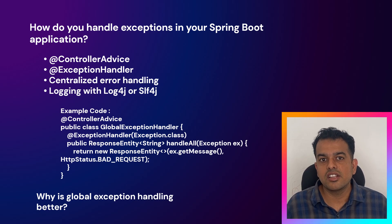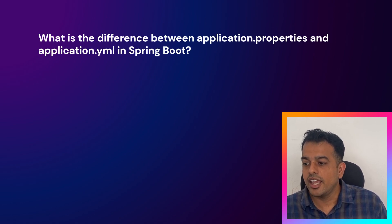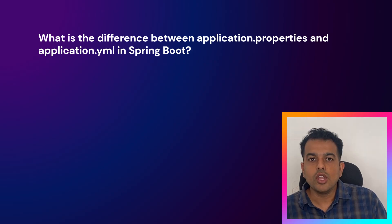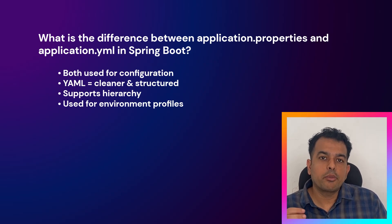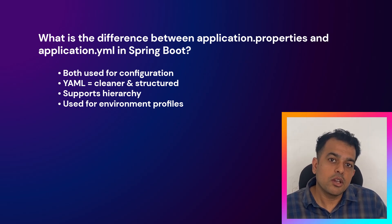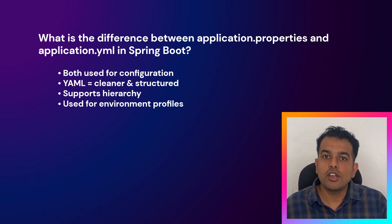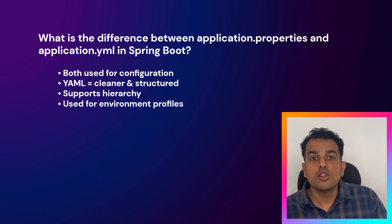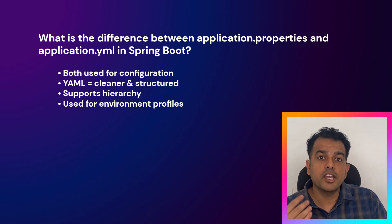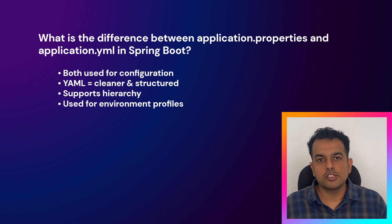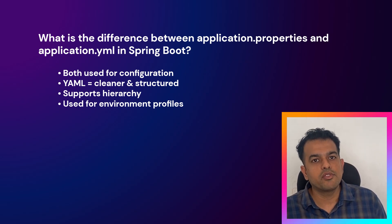Next the interviewer asked about application properties: what is the difference between application.properties and application.yaml in Spring Boot? Both are used for configuration, but YAML format is more readable and structured. YAML supports hierarchy, which makes it cleaner compared to properties files. Functionally both work the same — Spring Boot can read either — but most teams prefer YAML for environment-based configuration.